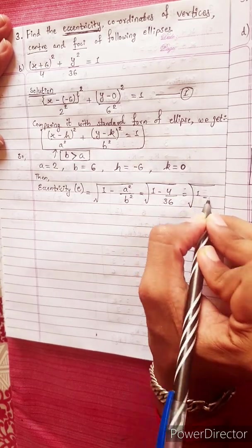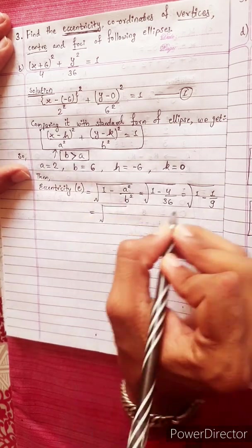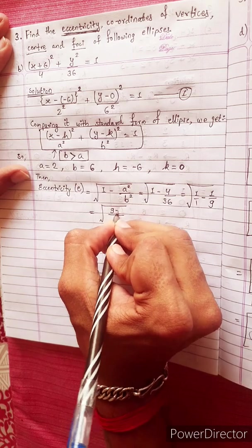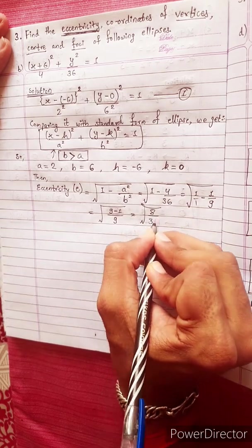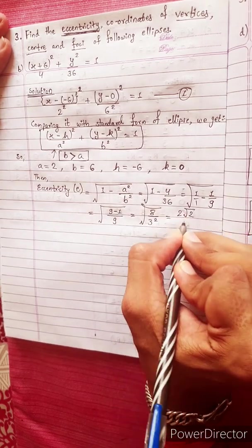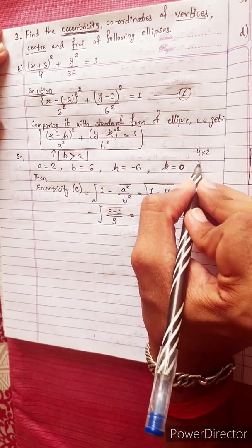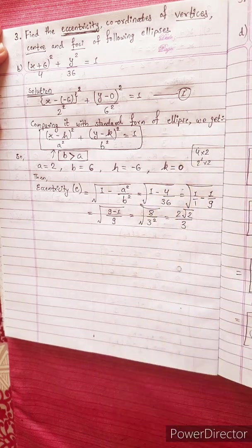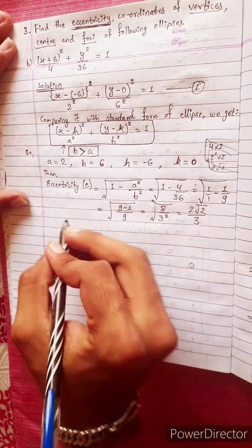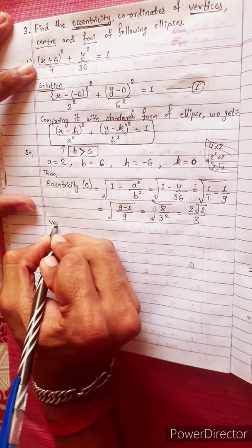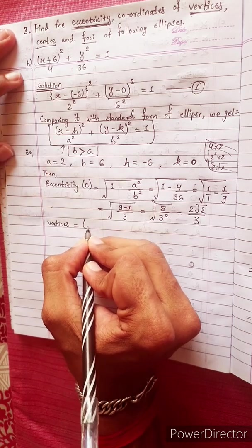How much is 1 minus 4/36? Taking LCM of 9: that gives (9 minus 1)/9 equals 8/9. So eccentricity e equals under root of 8/9, which equals 2 root 2 divided by 3.